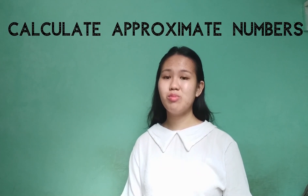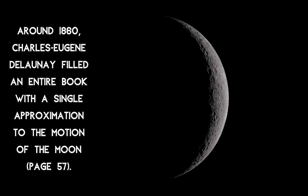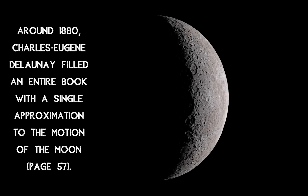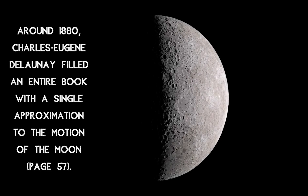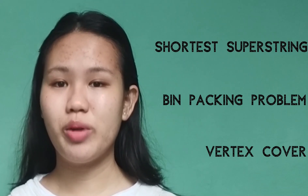When Newton and his successors tried solving the equations for a system of three or more bodies, they failed to find exact solutions. Instead, they tried to find ways to calculate approximate numbers. For example, around 1860, Charles Eugene de Lunay filled an entire book with a single approximation to the motion of the Moon. Other problems that have approximate algorithms include the bin packing problem, the vertex cover, and the shortest superstring.